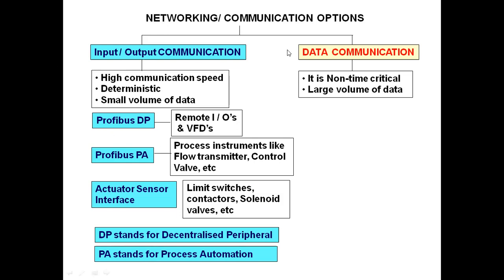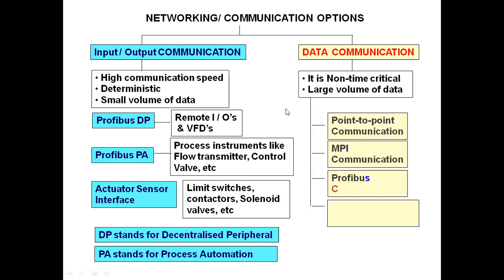For data communication we have: point-to-point communication, MPI communication, Profibus communication, and Profinet communication. Point-to-point means only two nodes — only two modules communicating at a time. This was a previous protocol in Siemens, but nowadays it is not much used — for example not used with S7-200 series. There is an adapter for point-to-point communication and many different communication options available.